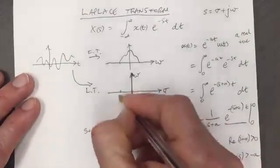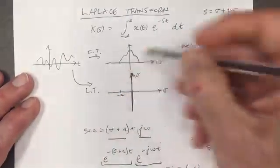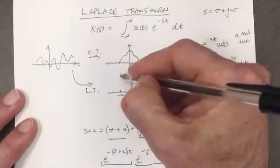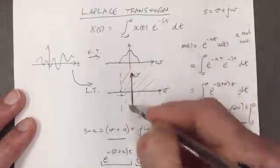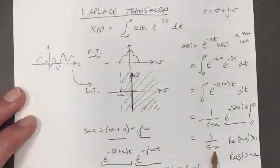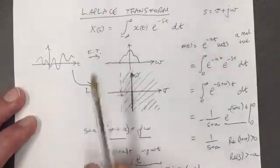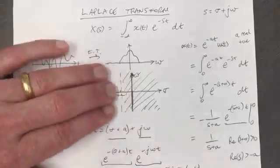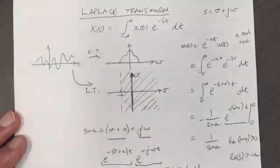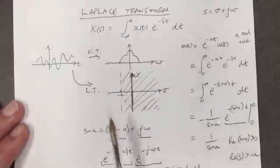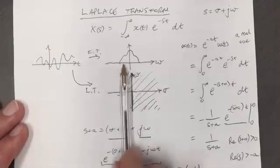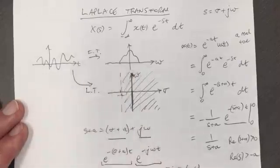a was positive, so minus a is going to be over here. And the real part, which is on the horizontal axis, needs to be bigger than that. So this means there's an area of our surface of s where we can find the answer. On this side of our plane, we don't have the Fourier transform, the Laplace transform defined. On this side of the plane, the Laplace transform is defined. And what we'll find is this is always going to be the case, that these regions are vertical lines and you're either on one side of the vertical line or the other.